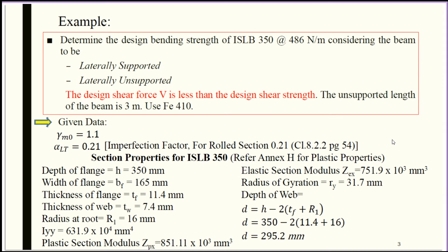The problem statement is to determine the design bending strength of ISLB 350 at 486 Newton per meter considering the beam to be laterally supported and laterally unsupported. Here the design shear force V is less than the design shear strength. The unsupported length of the beam is 3 meters.